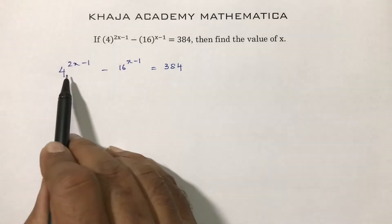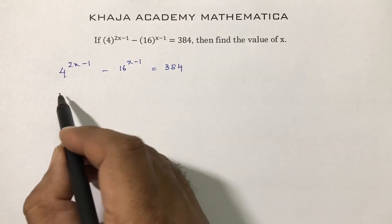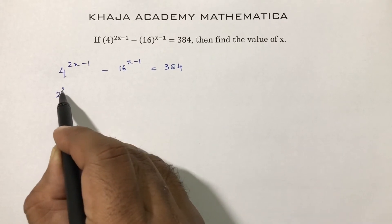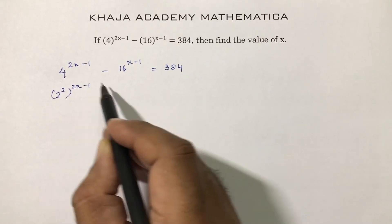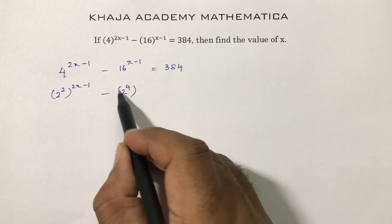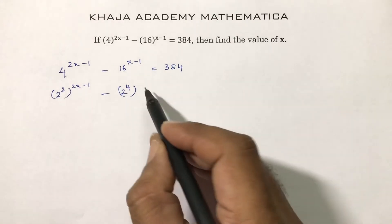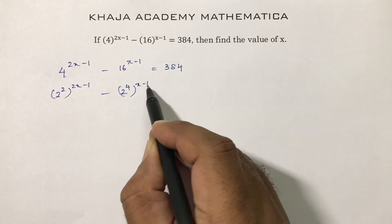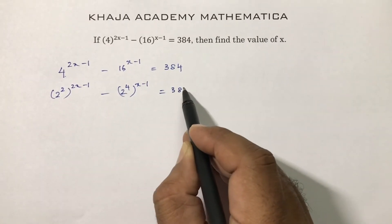These two terms I will change in terms of 2. So 4 I can write as 2 power 2 whole power 2x minus 1. 16 I will write as 2 power 4 whole power x minus 1 equals 384.